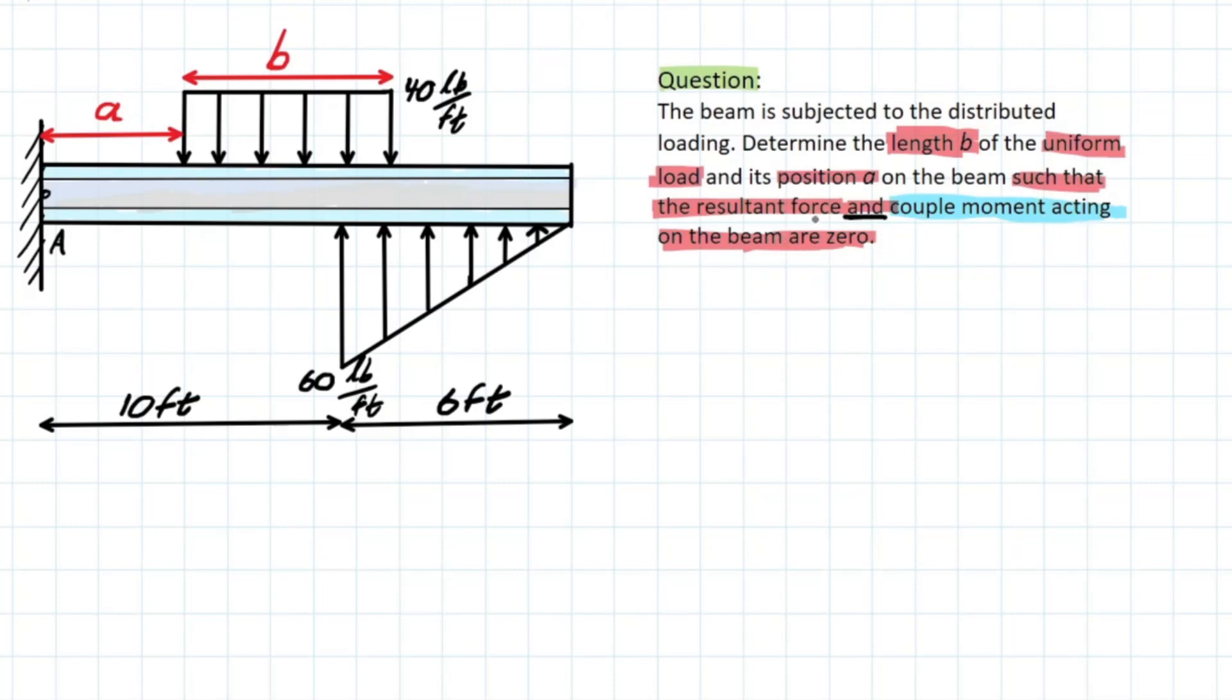So the first part of this problem can be divided up as find the resultant force, which is equal to zero. So we have Fr, which is going to equal summation of forces at y, because we only have forces acting in the y component, and this is going to equal zero. We pick our convention, positive is upwards, and we can go ahead and solve this problem.